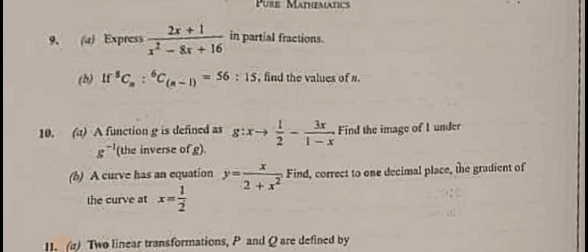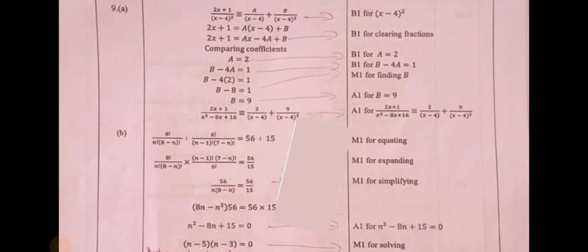A, express 2x plus 1 over x squared minus 8x plus 16 in partial fractions. B, if 8 combination n to 6 combination n minus 1 equals 56 to 15, find the values of n.